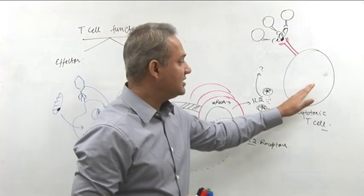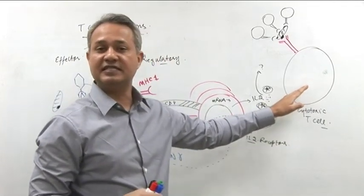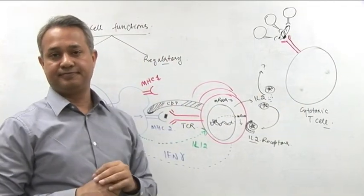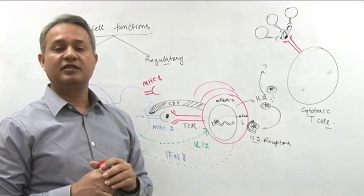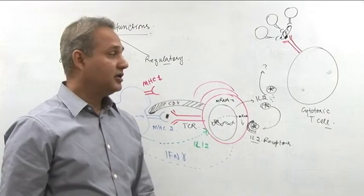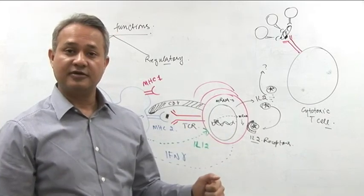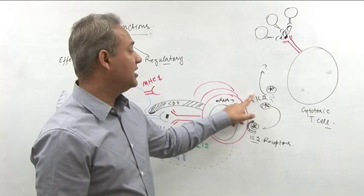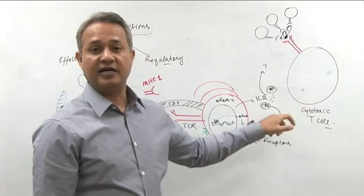Now, this T cell, this cytotoxic T cell is not active. What does that mean? That means it is not really doing anything, it is just holding on to that pathogen and sitting there. How do we make it active? We make it active by stimulating it with IL-2.